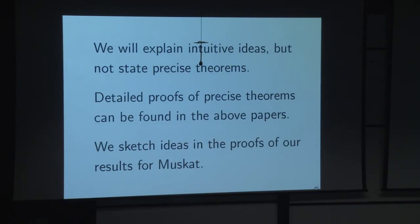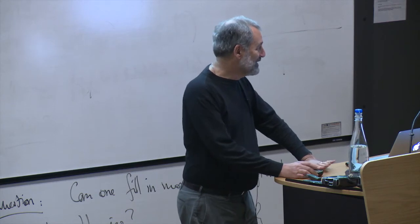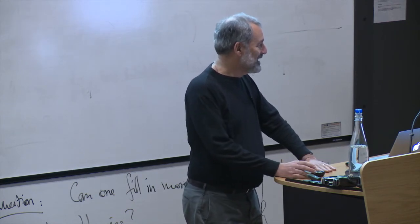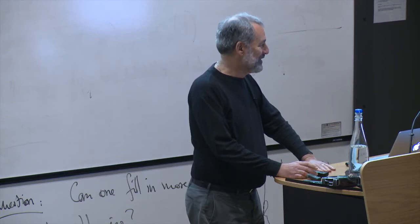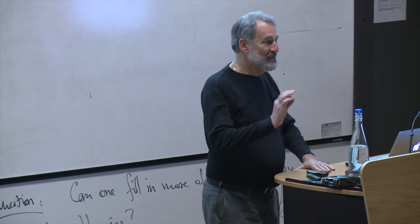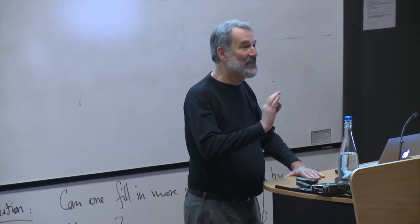This is a talk for a general audience, so I'm not going to give the precise, technically correct statements of the theorems, let alone the proofs. I'm going to explain intuitive ideas. The detailed proofs can be found in the papers. But I do want to sketch ideas in the proof, and I'm going to do that for the Muscat problem.